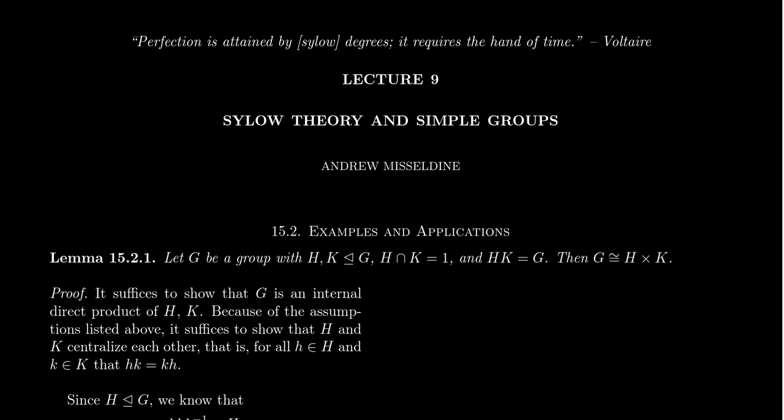By studying Sylow P subgroups, we can make statements about the presence of normal subgroups. Sylow theory is very useful in showing that certain groups cannot be simple, because it guarantees the existence of a normal subgroup. In addition to Sylow subgroups, we might make arguments about centers, commutator subgroups, or other guaranteed normal subgroups, as well as normalizers of Sylow subgroups. This lecture is the first of a two-part lecture, considering groups of order P times Q.